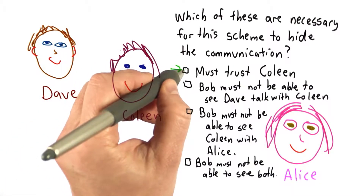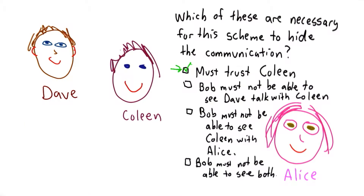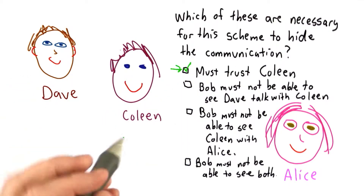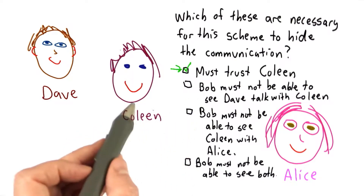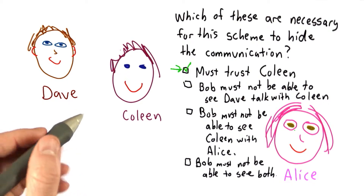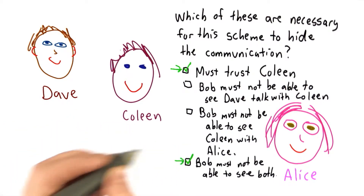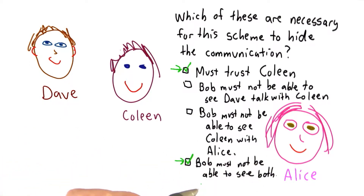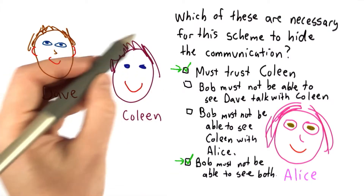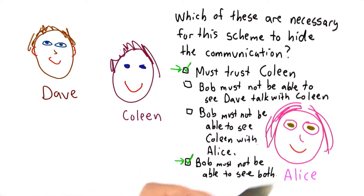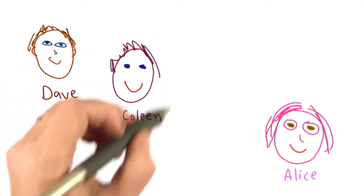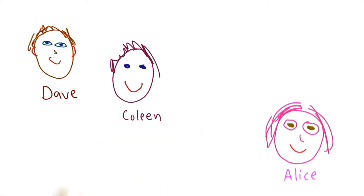The answer is it requires me to completely trust Colleen. Colleen knows that I'm giving a message to her, and she can open that message and know that it goes to Alice. It doesn't require the first one — if Bob sees me talking with Colleen, presumably that's not a problem. It doesn't require the second — if Bob sees Colleen talking with Alice, that's also not a problem. But if Bob sees both of those in quick succession, especially if he sees the envelopes being handed on, he has good reason to suspect that I'm talking with Alice. We need both of these properties: we need to know that Colleen can be trusted, and we need to know that Bob can't see both of these transactions. Those are pretty high security assumptions. We don't want to have to trust Colleen completely, and we don't want to rely on the fact that Bob can't see these two conversations.